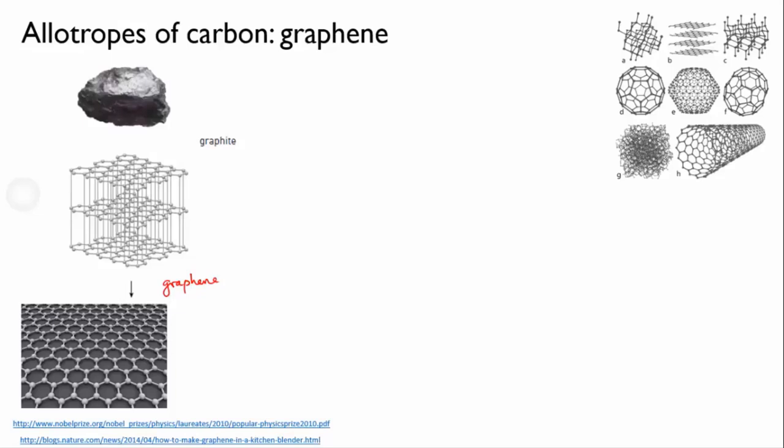They pulled a thin layer of graphite off a larger lump using sticky tape, and then with further bits of sticky tape they removed more and more graphite layers until they could see under a microscope that the graphite had become transparent. Perfecting this process, they eventually obtained a single layer of graphite, which they called graphene.